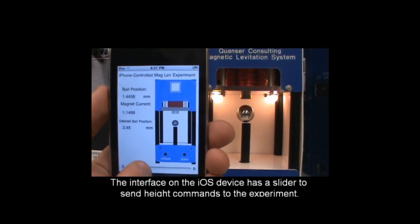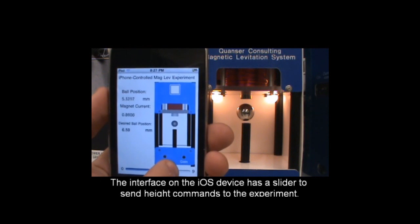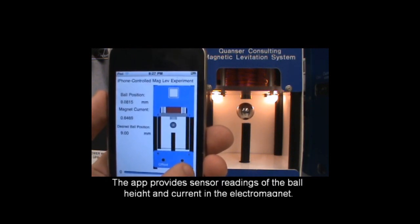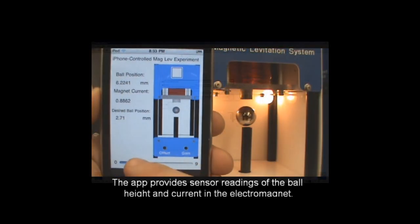This last demonstration of our emerging iPhone controlled laboratory is an iPhone controlled magnetic levitation system. Notice how this application also contains an animation which updates itself in real time based on the sensor data it receives from Simulink regarding the position of the steel ball.